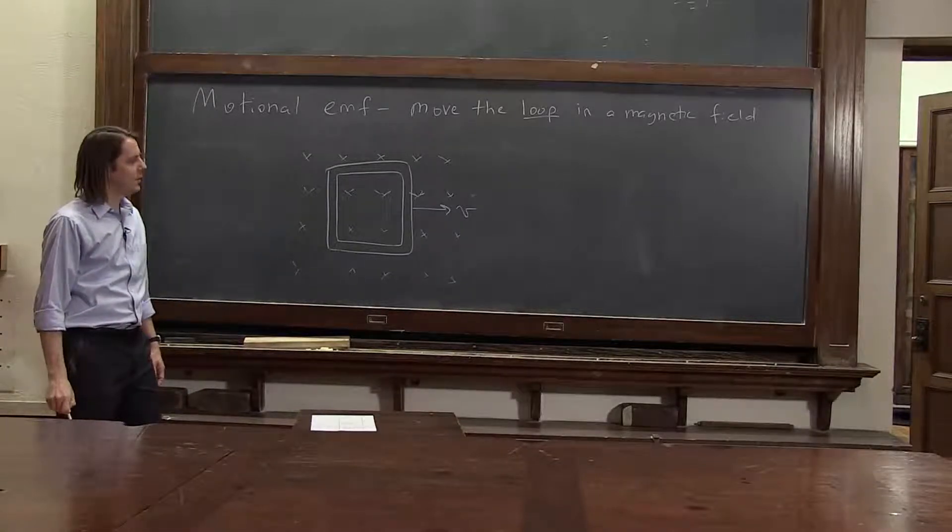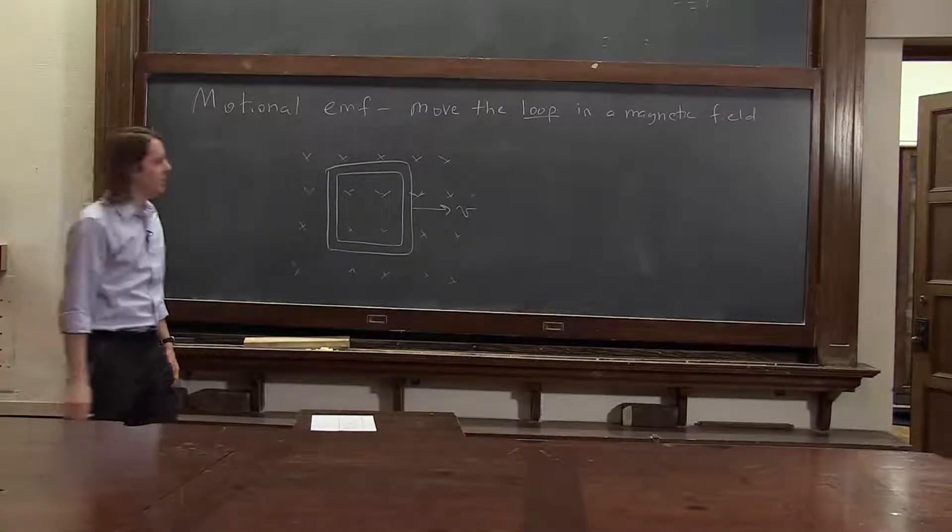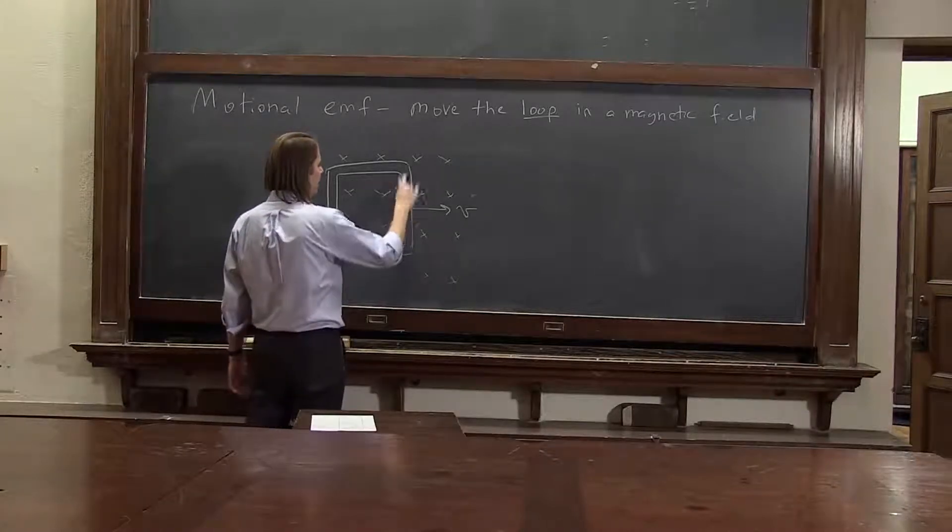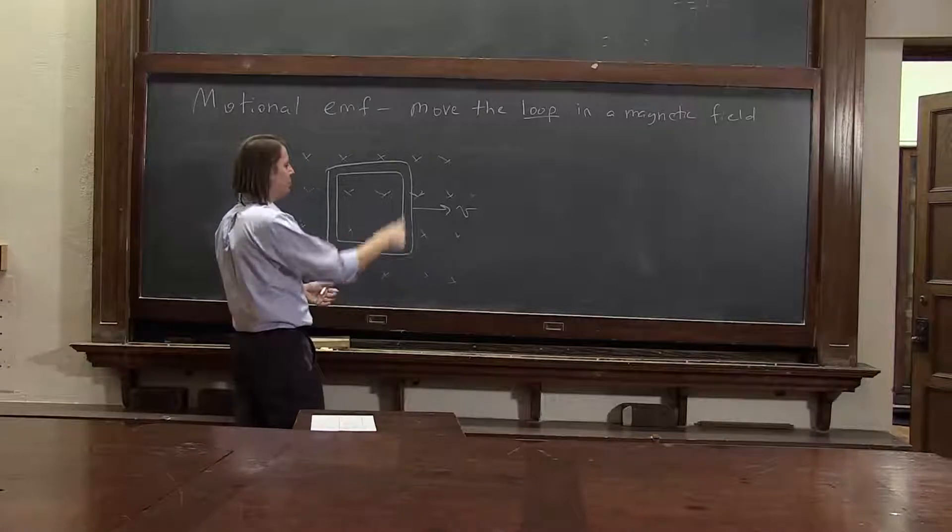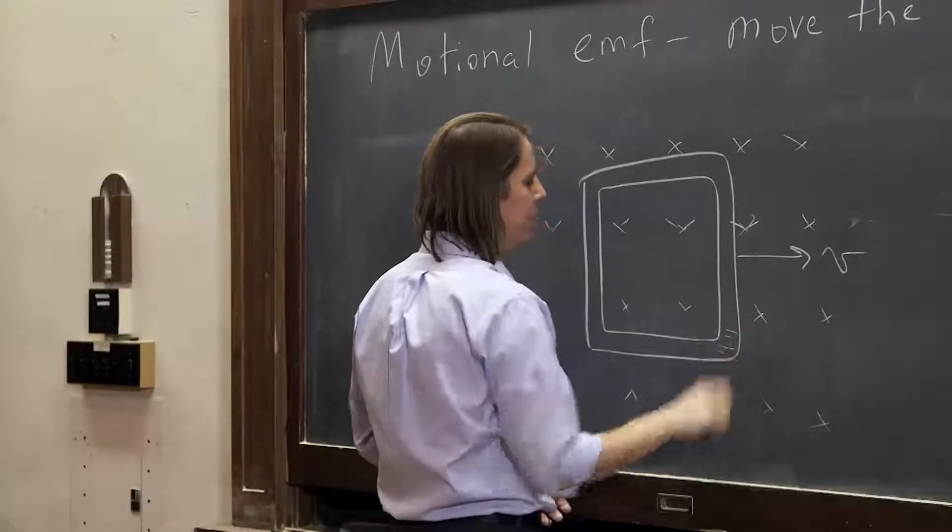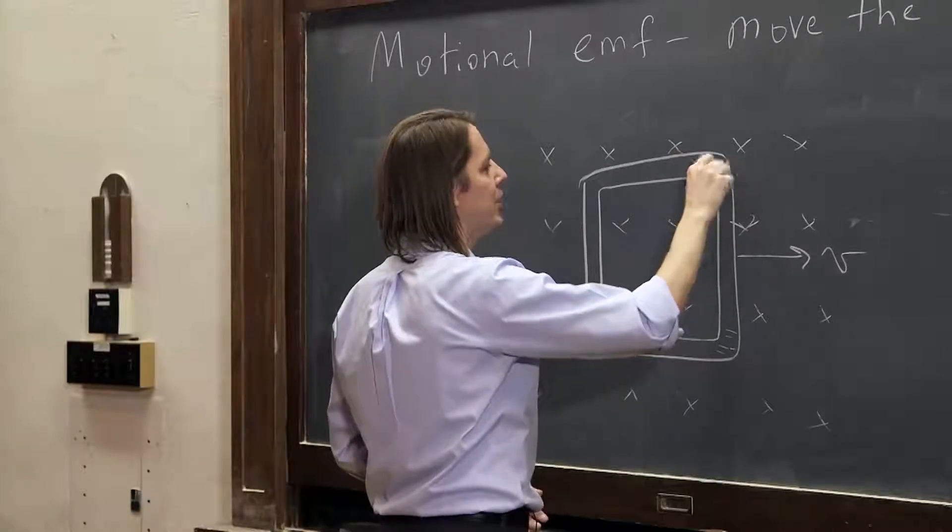And let's think about the QV cross B force on the electrons. So electrons sitting in here, they're free to move. V cross B is up, but they're electrons, and they're negative. So they feel a force down. And you get some negative electrons down here, which leaves some positive up here.